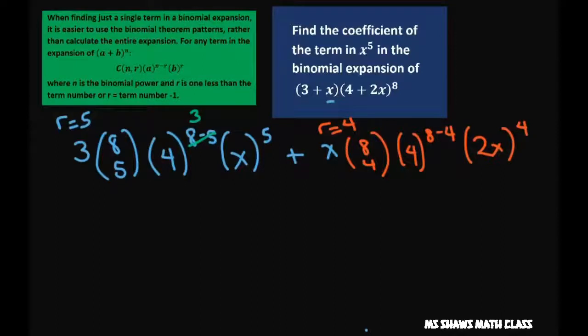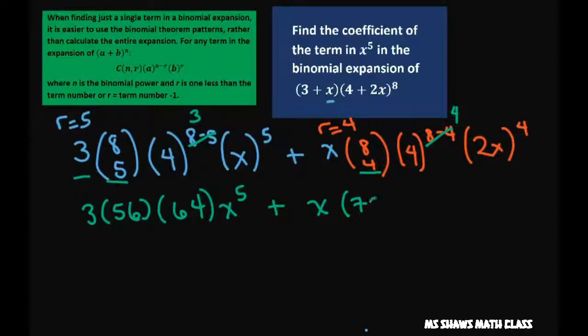So this is just 3 and this is 4. So now you just have to clean this up. So you're going to get 3 times 56, that's this term, 4 cubed is 64, and then we have x to the fifth. Plus x times 8 choose 4 is 70, 4 to the fourth power is 256, 2 to the fourth is 16, and you have x to the fourth.